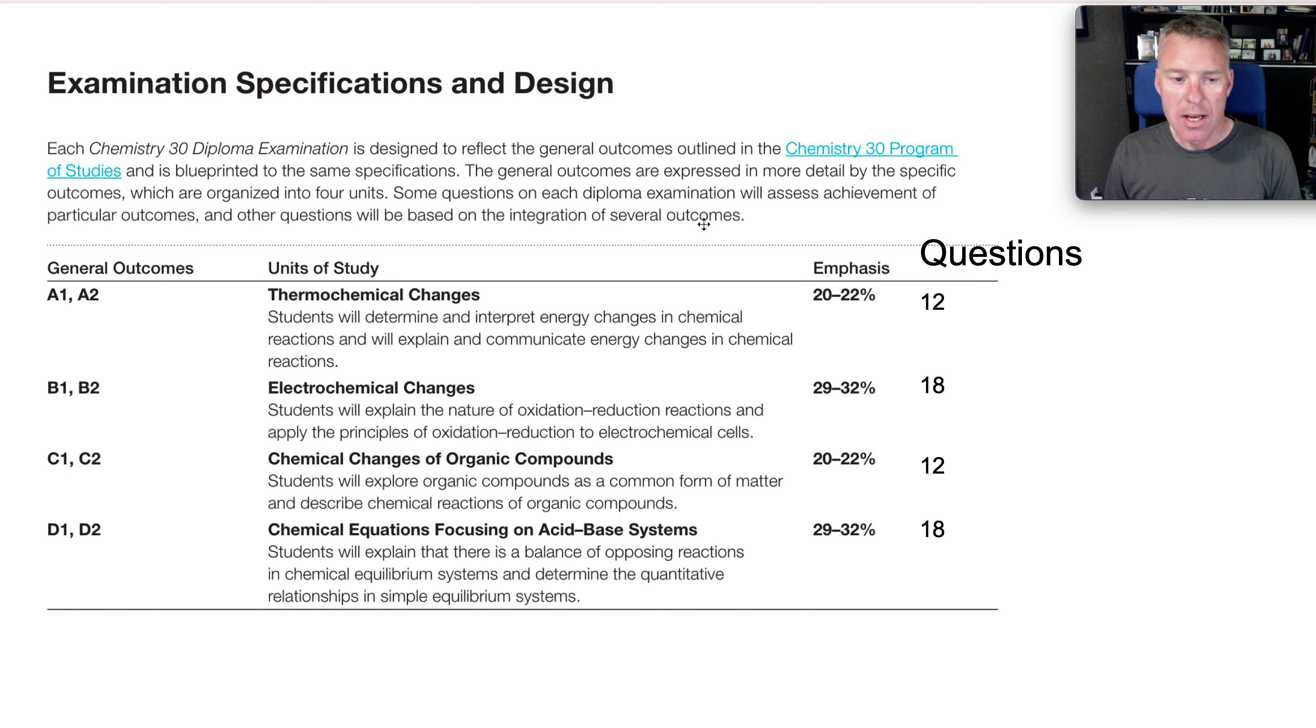Electrochem, electrochemical changes or redox will be about 18 questions on the diploma. Organic about 12 and equilibrium about 18. Now some questions can fall into multiple categories. You could have an organic chemical maybe a carboxylic acid and they ask you for the oxidation state of the carbon in that. So it's not always straightforward exactly to put a question in just one category.